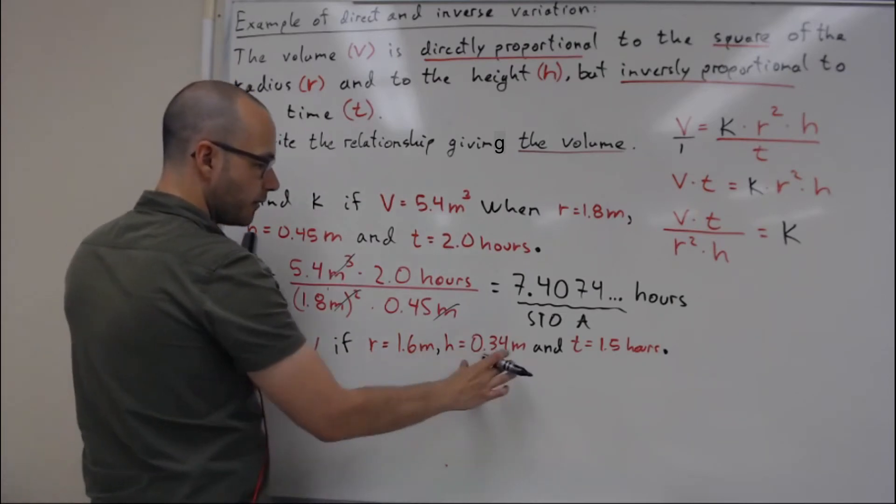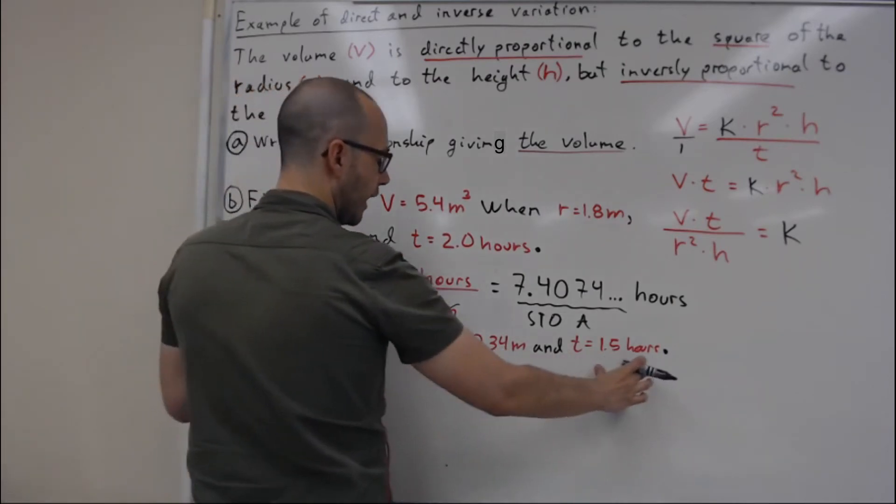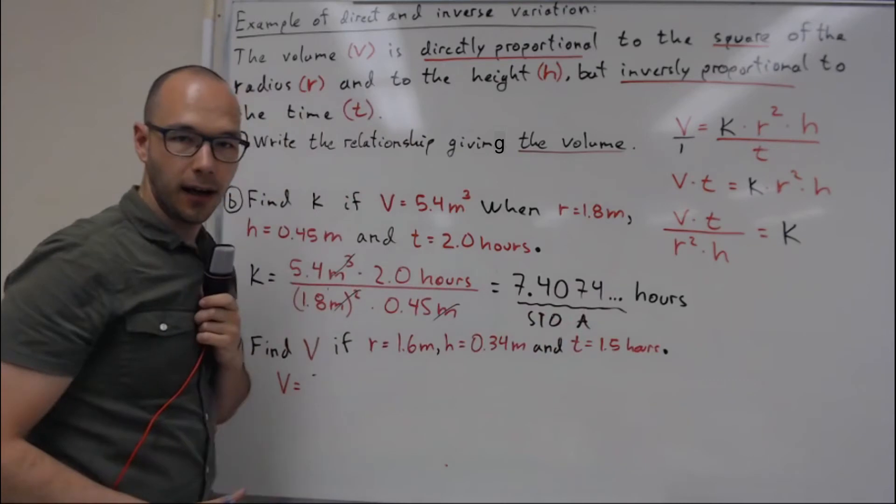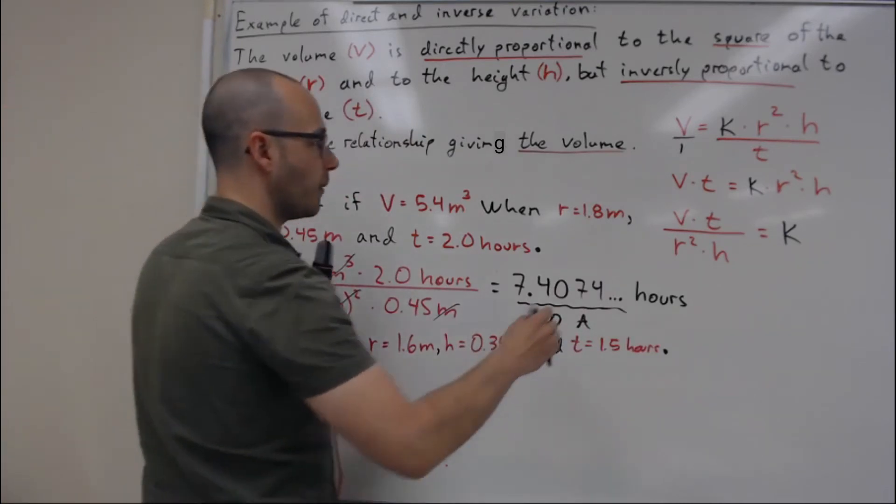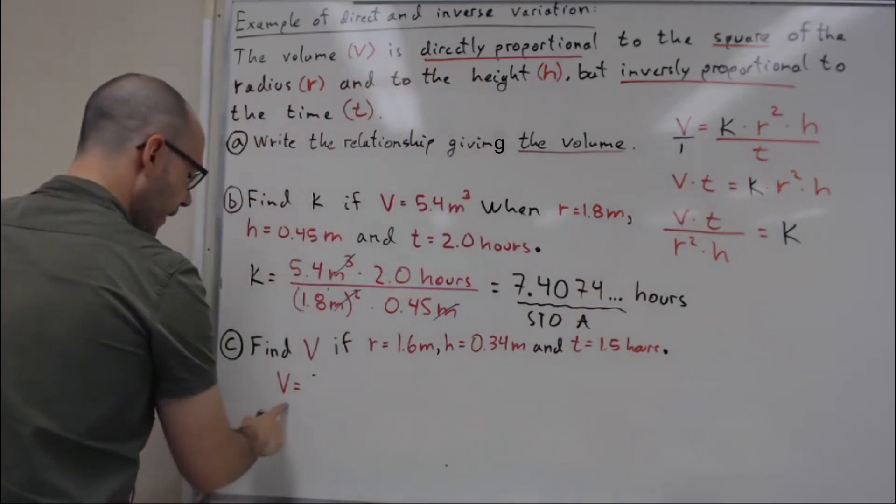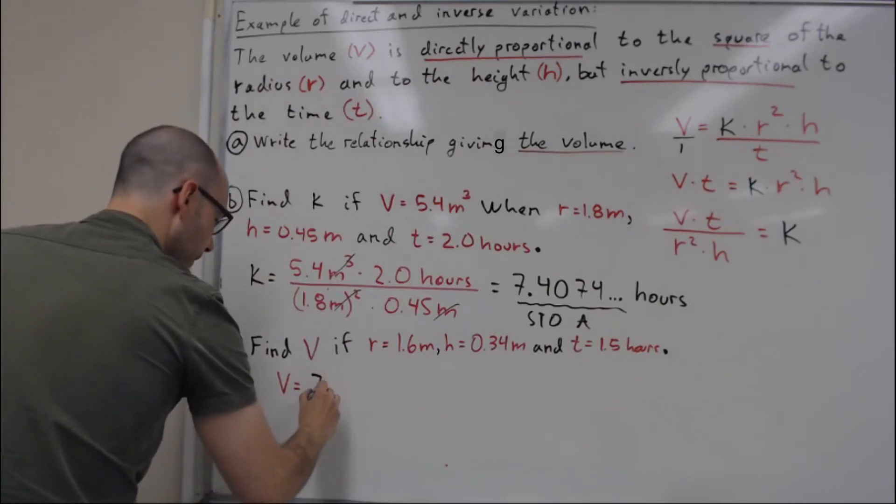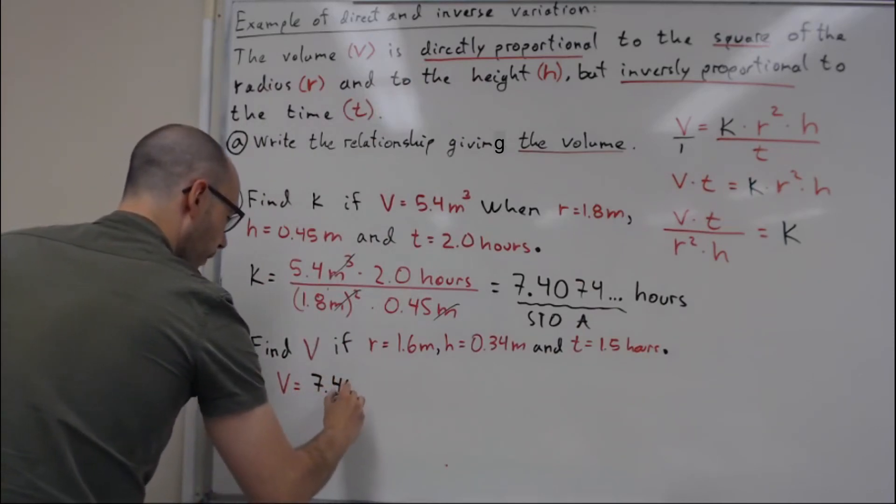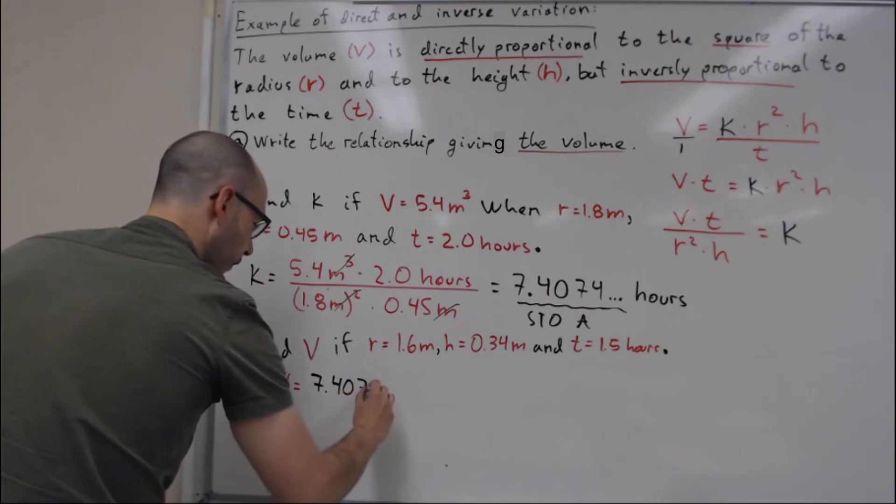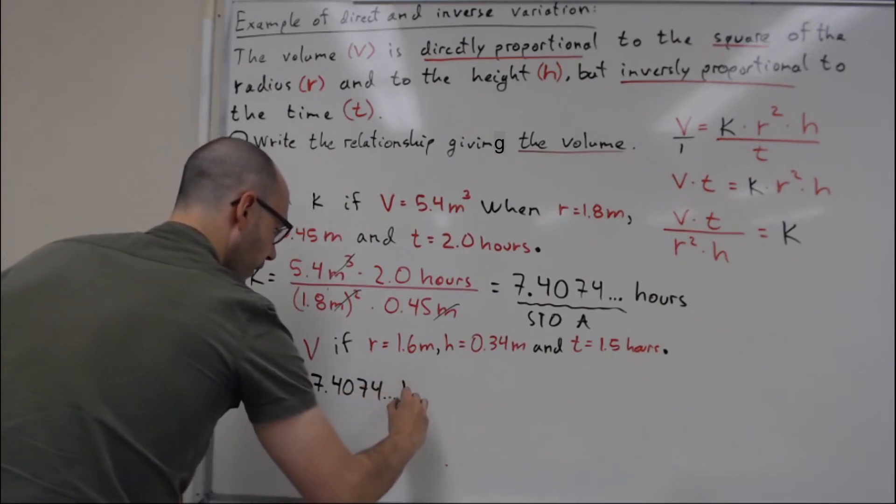So now I will use the original model where V is equal to k, which is 7.4074 dot dot dot hours.